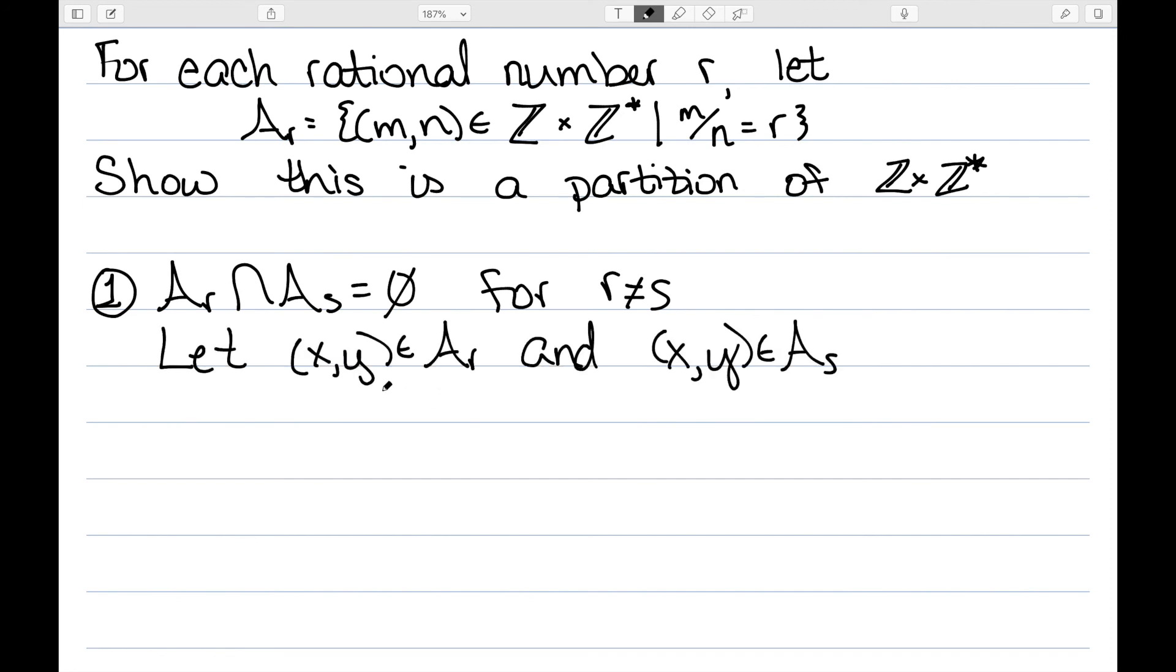Let's suppose I have this ordered pair (x, y) that belongs to both Aᵣ and Aₛ. Well, since it's in Aᵣ, we know that r is equal to x/y. And since it's in Aₛ, we know that x/y is equal to s by the conditions of how these are defined.